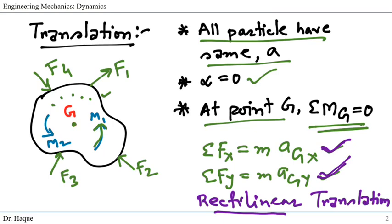We talked about at point G no rotation. What about if we are interested in another point which is not at point G? It could be any point here or here.